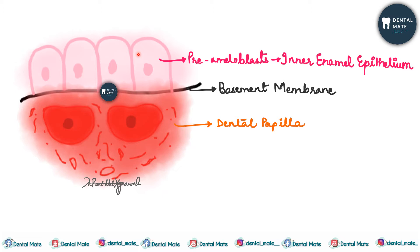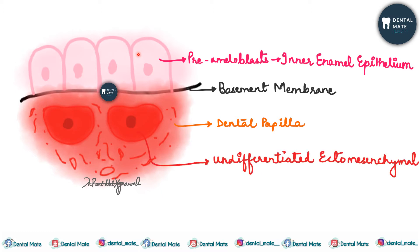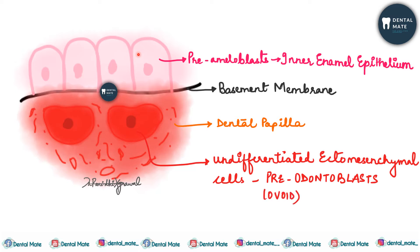The dentine-forming cells — the odontoblasts — are differentiated from the dental papilla cells. The undifferentiated ectomesenchymal cells in the dental papilla are known as pre-odontoblasts, and these are ovoid in shape.